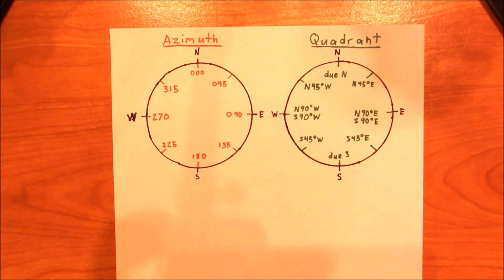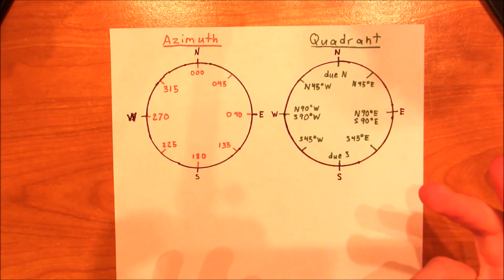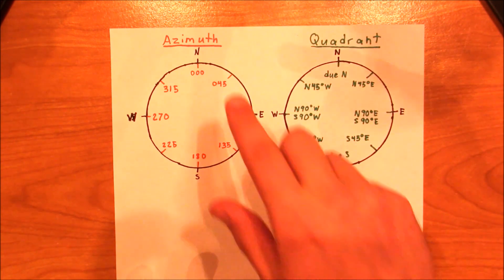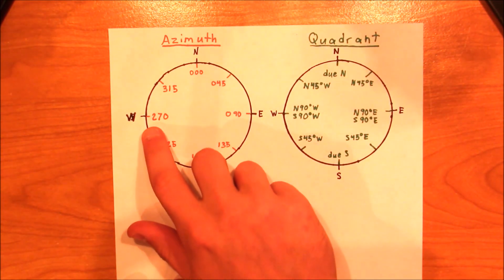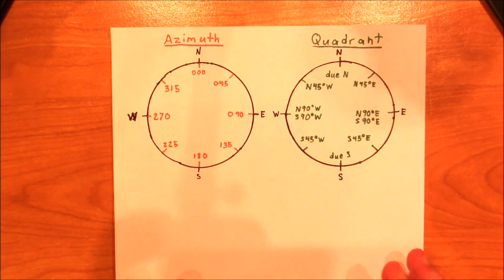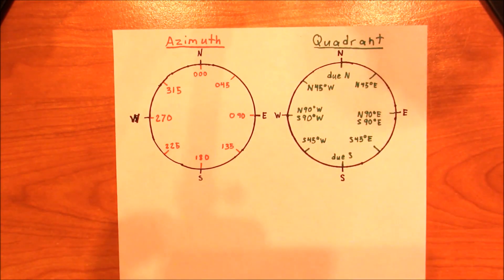So before I get into that, let me go ahead and talk to you about compass directions. We're all pretty familiar with the standard compass — we've got north, east, south, and west. Now there are two different ways of representing a compass: there's azimuth and then there's quadrant.